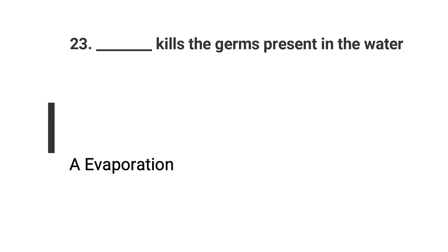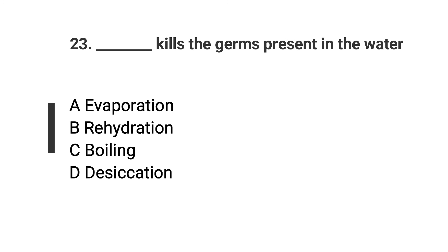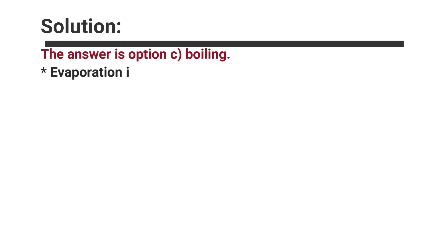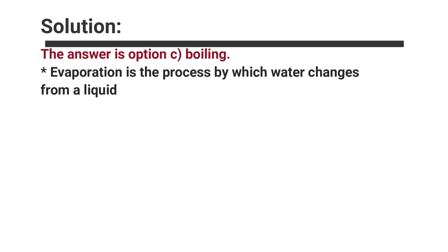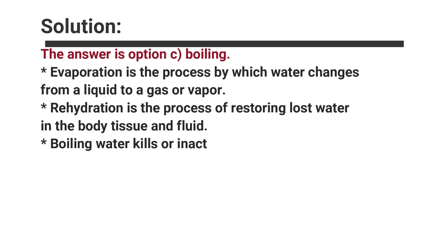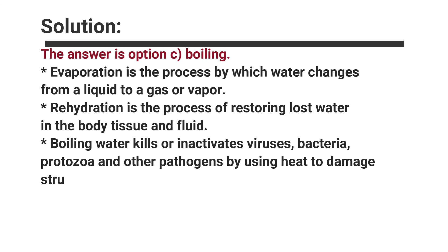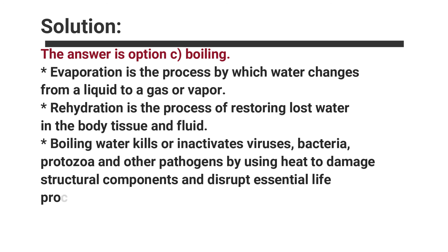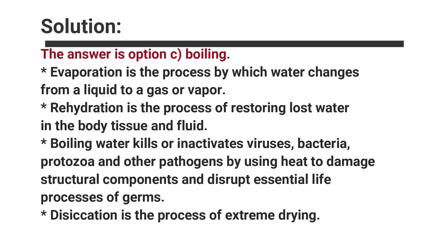Question number twenty-three: Dash kills the germs present in the water. Options are A. Evaporation, B. Rehydration, C. Boiling, D. Desiccation. The answer is option C, Boiling. Evaporation is the process by which water changes from a liquid to a gas or vapor. Rehydration is the process of restoring lost water to the body tissues and fluids. Boiling is the rapid vaporization of a liquid when heated to its boiling point. Boiling water kills or inactivates viruses, bacteria, protozoa, and other pathogens by using heat to damage structural components and disrupt essential life processes of germs. Desiccation is the process of extreme drying.